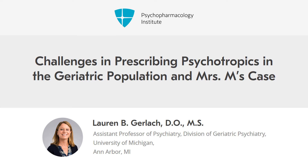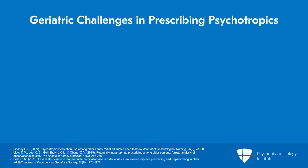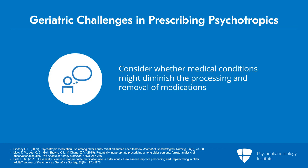Geriatric challenges in prescribing. It's important to think about illnesses that affect older adults and how these medical conditions might further diminish the processing and removal of medications. For instance, patients with cirrhosis or liver disease, or diabetes with subsequent renal impairment.